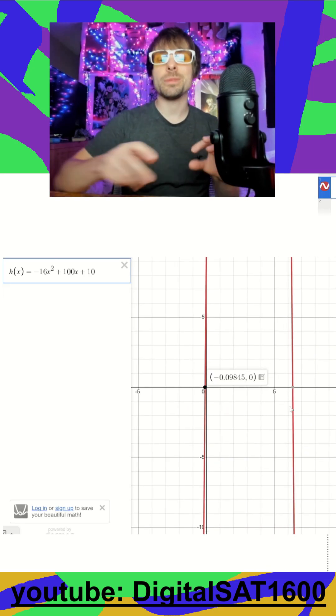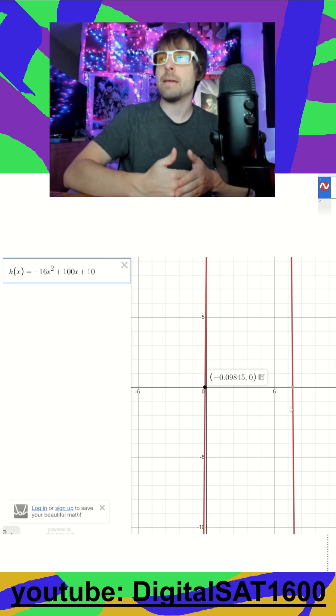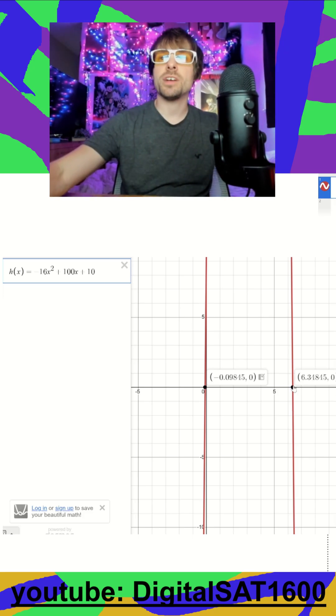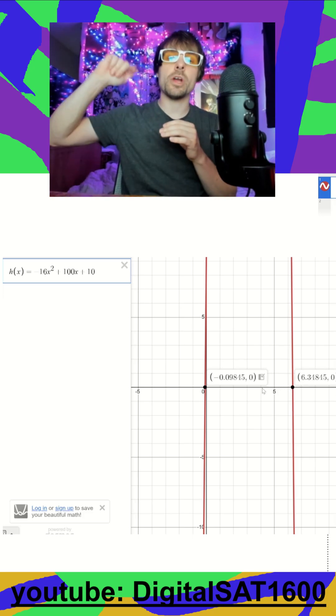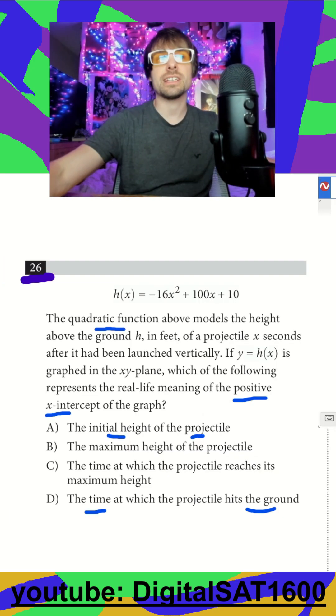Our negative x-intercept doesn't actually exist because it's time, you can't go back in time, right? So they specify positive x-intercept, that's going to be when our projectile hits the ground. And it looks like that's going to be d here.